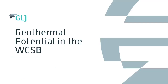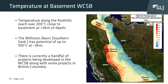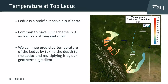Now we'll look at the geothermal potential in the Western Canadian Sedimentary Basin. To assess it, we need to understand the geothermal gradient across the basin, which can be calculated using bottom hole temperatures or test data such as DSTs or flow pressure tests. We can take the temperature at a known depth and calculate a geothermal gradient, defined as temperature at depth minus surface temperature divided by true vertical depth. Multiplying the gradient by the true vertical depth gives us a predicted temperature at that depth. This can be applied to any formation top, giving us a temperature map of its geothermal potential.